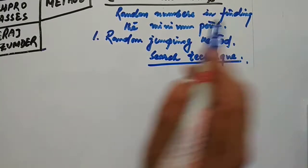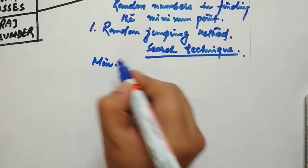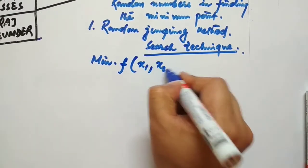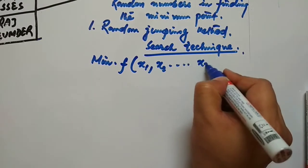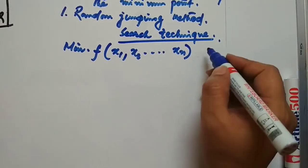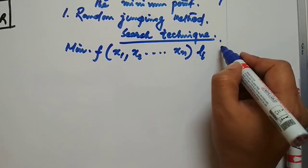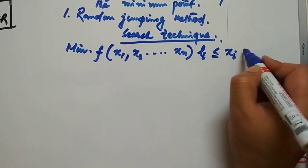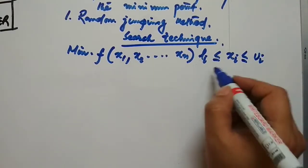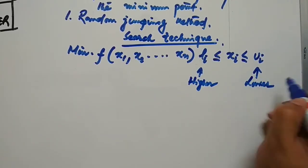What do we do basically in this technique? Say there is a given problem where you have to find the minimization of a function with variables x1, x2, ..., xn, and you have been given a range: li ≤ xi ≤ ui, where li is the lower range and ui is the upper range.